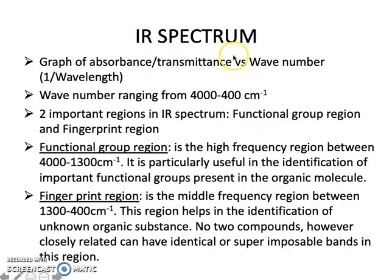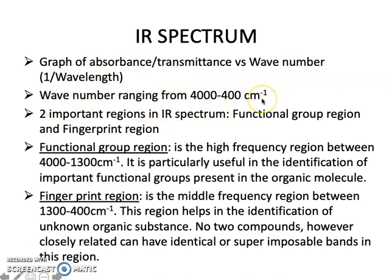The IR spectrum is a graph of absorbance versus wave number, where wave number is the inverse of wavelength. The wave number ranges from 4000 to 400 per centimeter on the x-axis. This range represents the middle IR region.